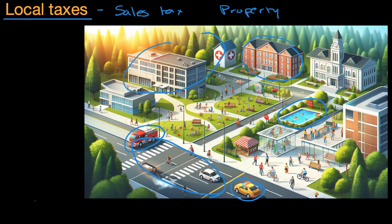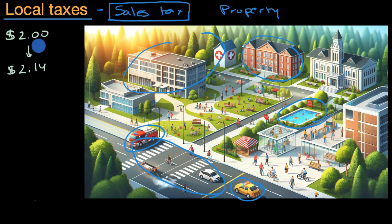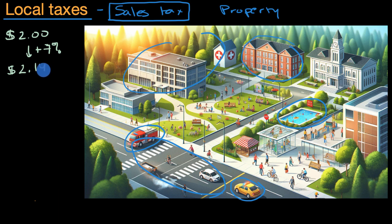Sales tax is probably the first type of tax that I became familiar with, even when I was very young. Because you probably noticed that if you go to the store and let's say something costs $2, then when you go to pay at the cash register, they're charging you $2.14. What they really did is they charged an extra 7%. 7% of $2 is 14 cents — they added that on. That added 14 cents is sales tax.